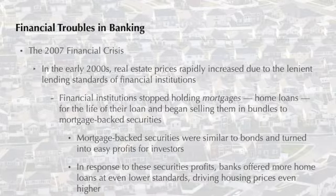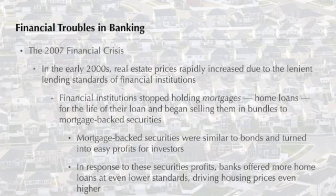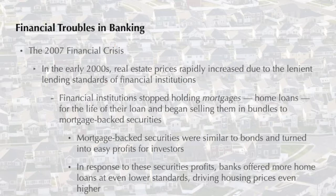The beginnings of the most recent financial troubles in banking began in the late 1990s and early 2000s, as housing prices steadily increased. These were the direct result of the relaxation of lending requirements to individuals looking to buy homes. Banks stopped holding mortgages — the name given to home loans — for the life of the loans, which usually lasted 20 to 30 years. Instead, banks sold bundles of these home loans to companies that looked to turn these mortgages into easy profits for their investors. As a result of these profits, banks offered more mortgages at even lower standards, leading housing market prices to increase further.